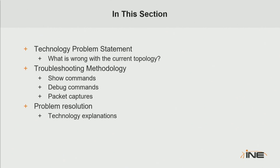The format of this series is that we have a technology problem statement describing something wrong with the current topology, and then it's up to us to use our troubleshooting methodology — show commands, debug commands, and packet captures — in order to find the problem resolution. Then we talk about technology explanations of DMVPN: what was the problem, why was it a problem, how does it affect the overall DMVPN design, and what are the possible workarounds and solutions.